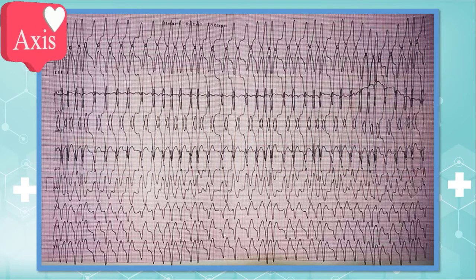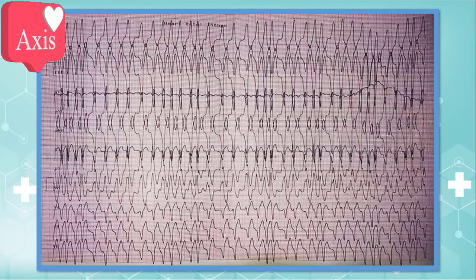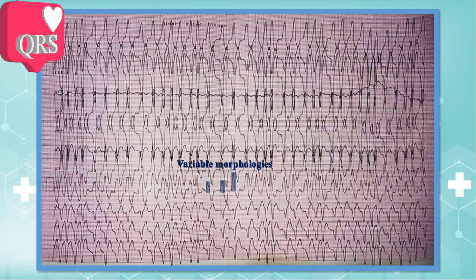Regarding heart axis, the complexes are positive in D1 and negative in D2, so the axis is deviated leftwards. Then we should go through waveforms and intervals. Thanks to atrial fibrillation, there is no visible P wave in this strip, so P wave and PR interval are not measurable. The QRS complexes are wide and morphologically variable, and pathologic Q waves are present in V4 to V6 and inferior leads as well.